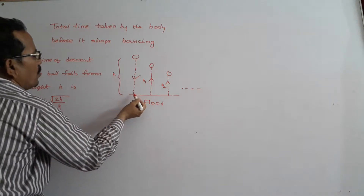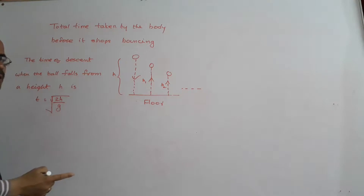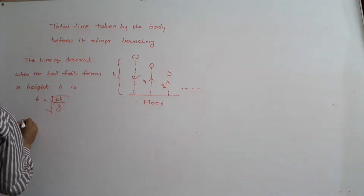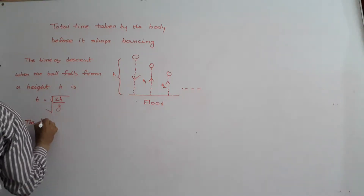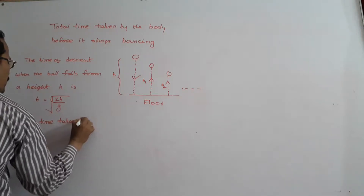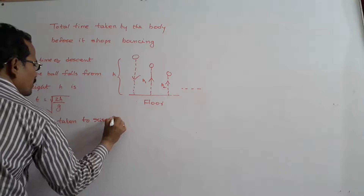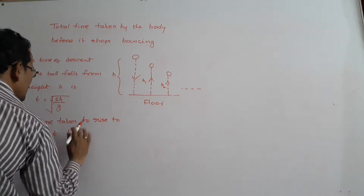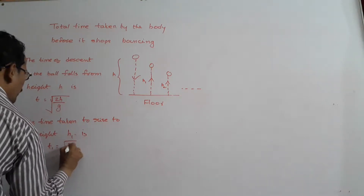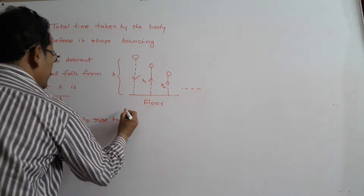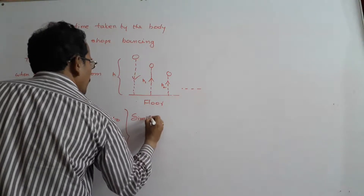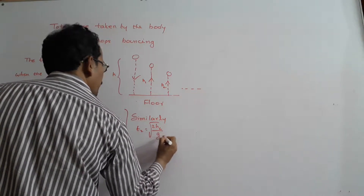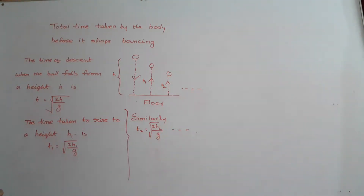The ball hits the ground and then rebounds to a height H1. The time taken by the ball to rise to a height H1 is equal to the square root of 2H1 by g. Similarly, T2 is equal to the square root of 2H2 by g, and so on. What is the total time travelled by the body?